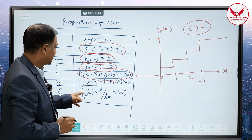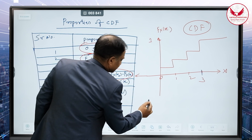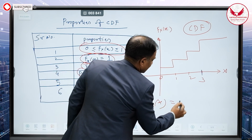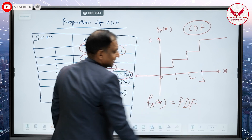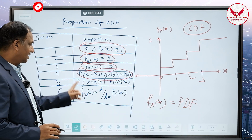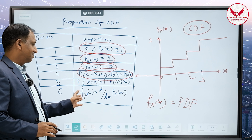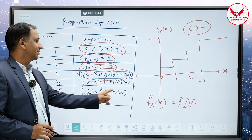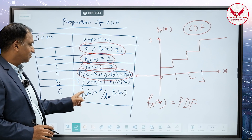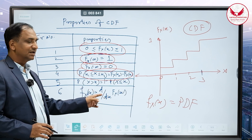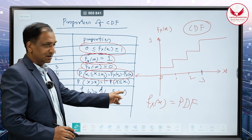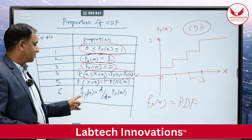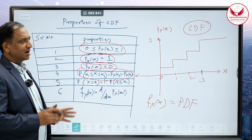Now, the small f(x) is called the PDF — that is, the probability density function. The relationship between the PDF and the CDF: the PDF is the derivative of the CDF. So small f(x) is equal to d/dx of capital F(x), where capital F(x) is the CDF and small f(x) is the PDF.